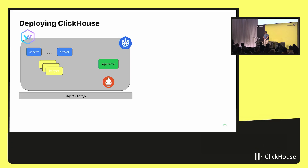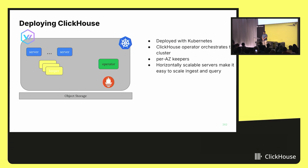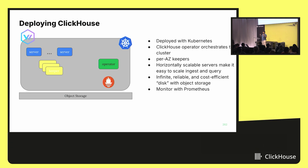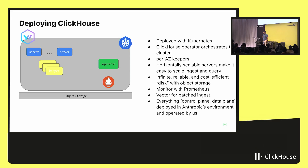So how do we deploy ClickHouse? We deploy with Kubernetes in our secure environment. The ClickHouse Kubernetes operator orchestrates the cluster. We have three keepers, one per availability zone. It's horizontally scalable, making it easy to scale ingest and queries. We get infinite, reliable, and cost-efficient disk with object storage. We monitor it with standard tools, so it's pretty easy to operate. For ingest, we use Vector — if you're not familiar, it's a simple agent that orchestrates your observability pipelines. Everything is deployed in an Anthropic environment and operated entirely by us.